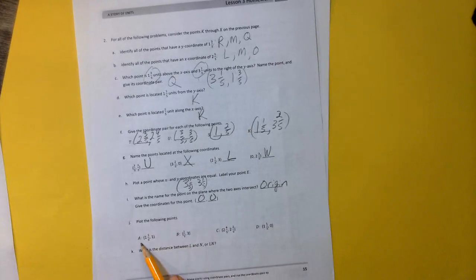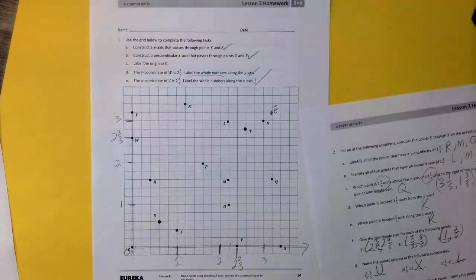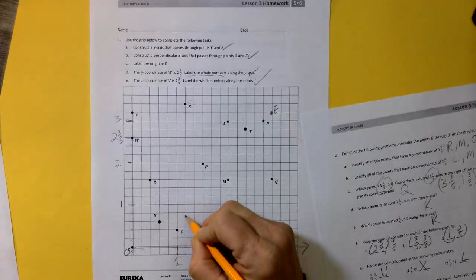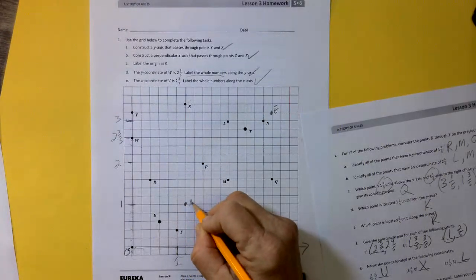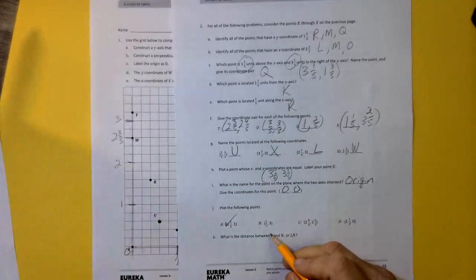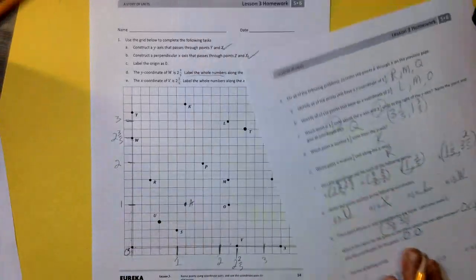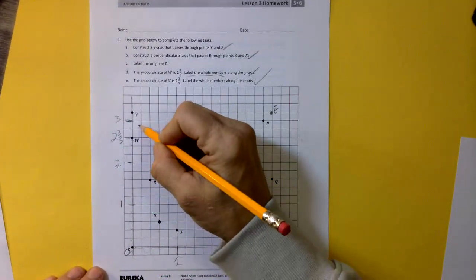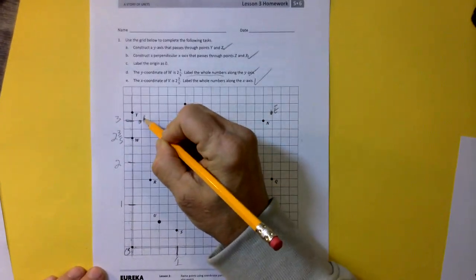Plot the following points. 1 and 1 fifth and 1. 1 and 1 fifth. So 1 and 1 fifth and up 1. We're going to call that A. B, 1 fifth and 3. So 1 fifth over 1 fifth and all the way up 3. That's going to be B.